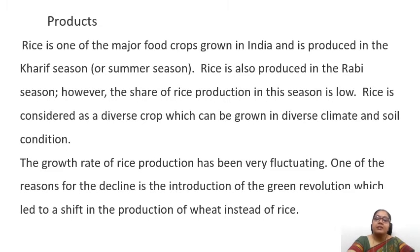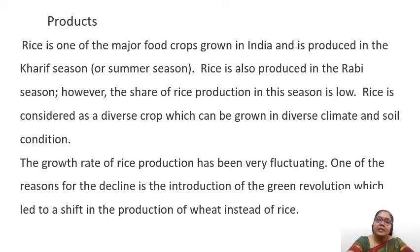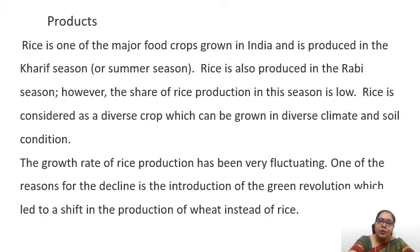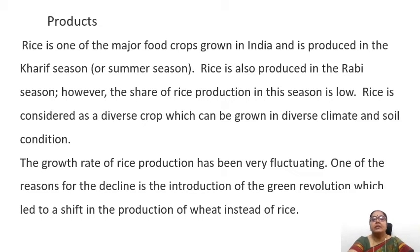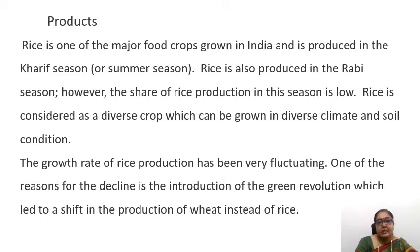Let's see the different products that are grown in India — covering just a few major ones. Beginning with rice, which is one of the major food crops grown in India. Rice is produced both in the Kharif season and the Rabi season, basically done in both the seasons.